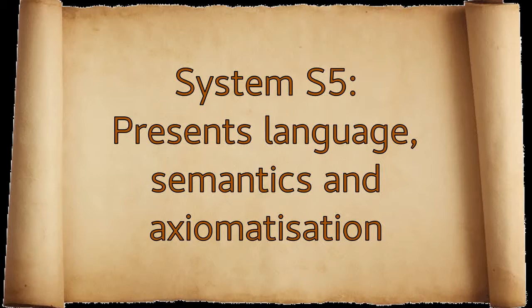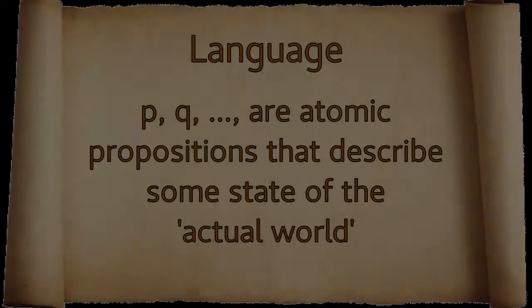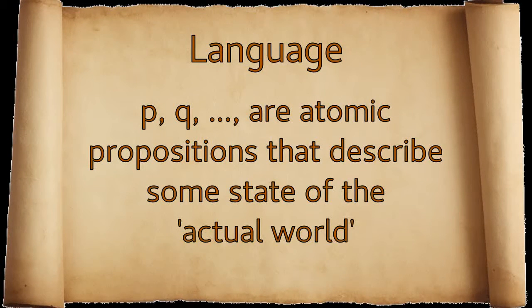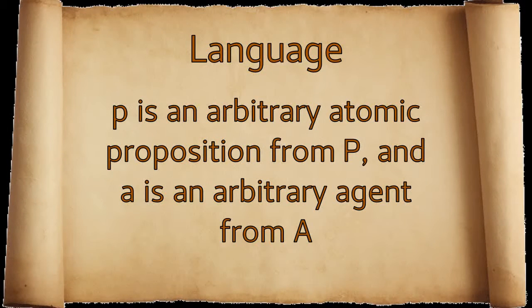With this system, we present the language, semantics, and axiomatization in subsequent subsections. The basic language for knowledge is based on a countable set of atomic propositions P and a finite set of agents A. Atomic propositions P, Q, and more describe some state of affairs in the actual world. Here, P is an arbitrary atomic proposition from P, and A denotes an arbitrary agent from A.